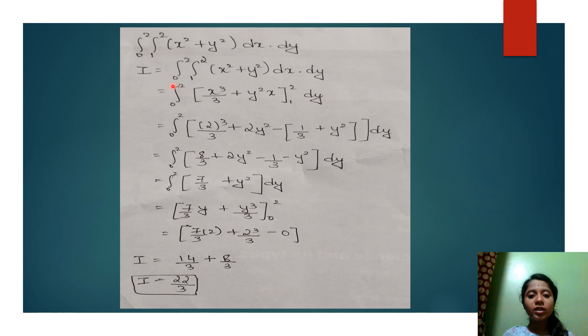The next step is to apply the upper limit to the equation in place of x. We are applying the upper limit 2 in the place of x and subtracting the same equation by applying the lower limit 1 in the place of x. That goes like this: integral 0 to 2, in the place of x it is 2.